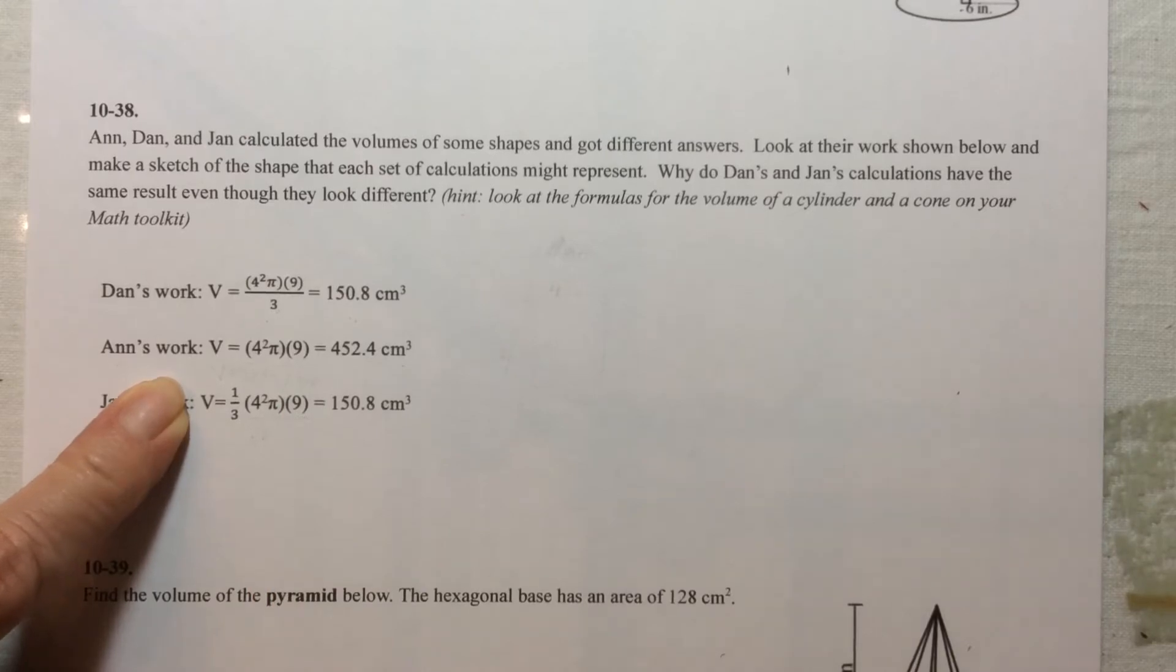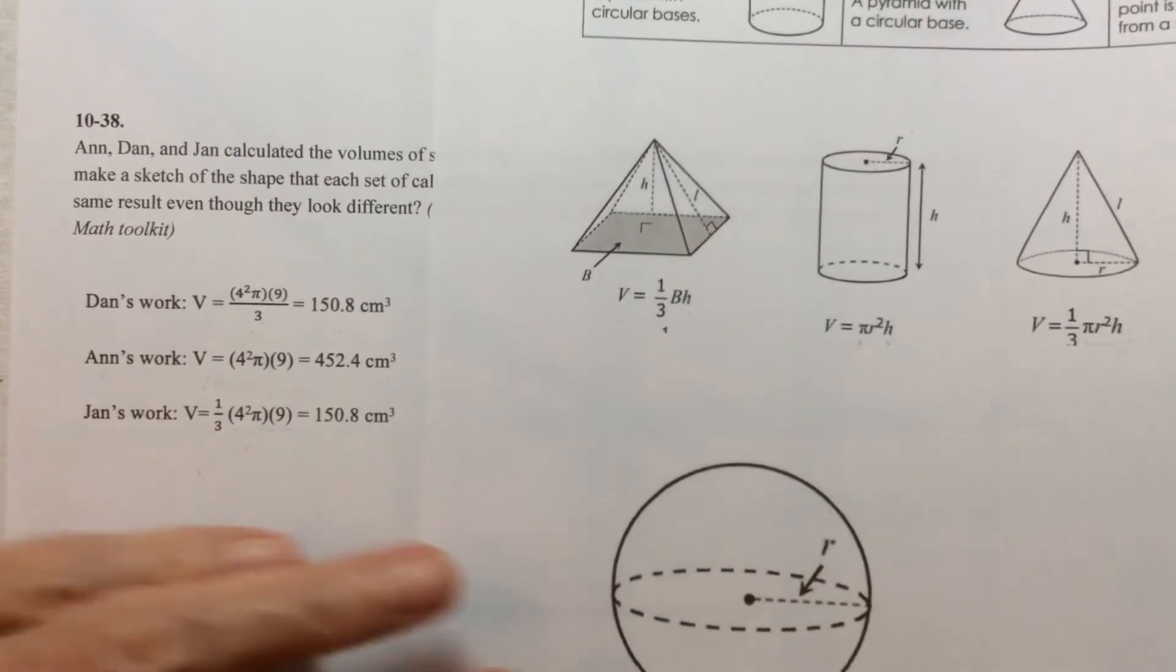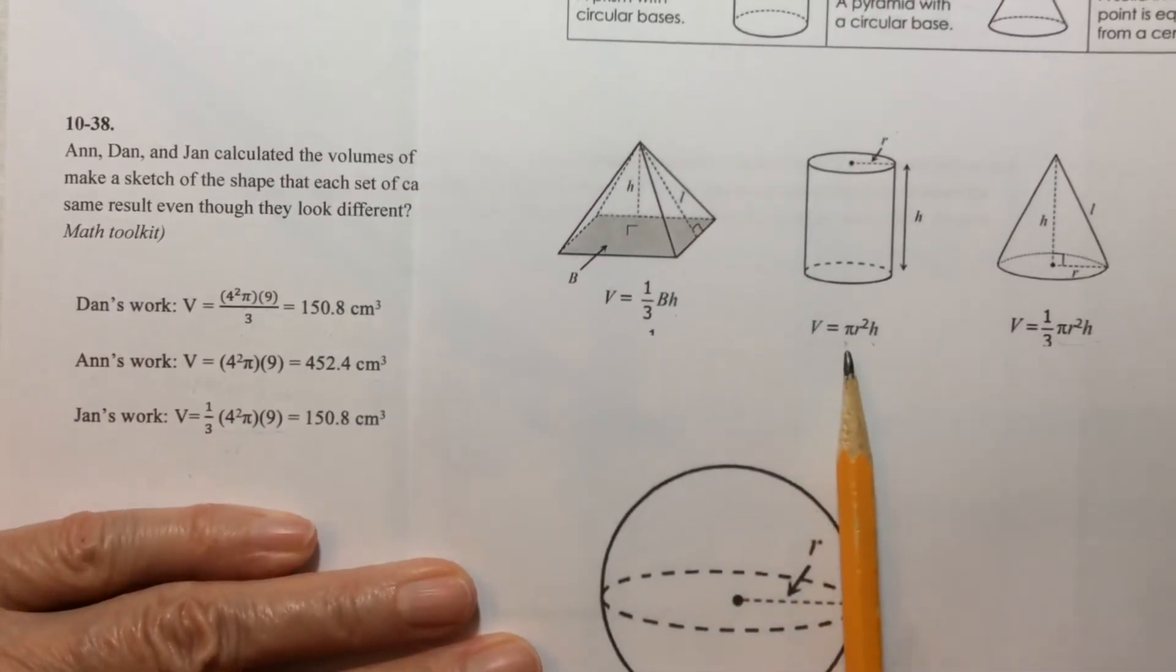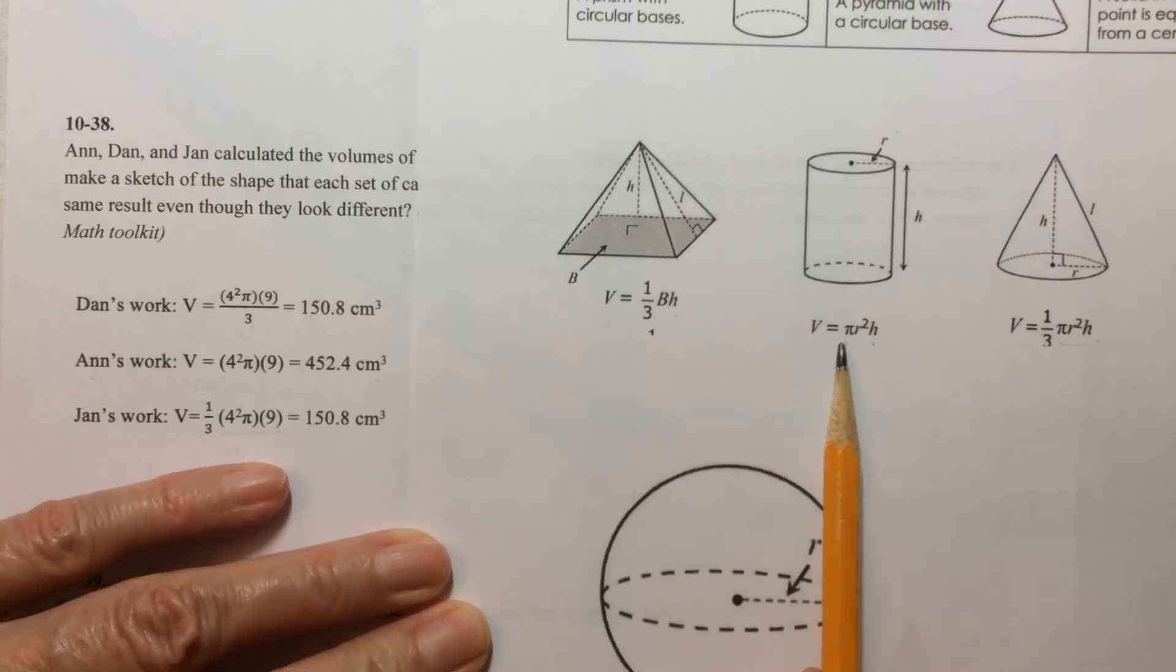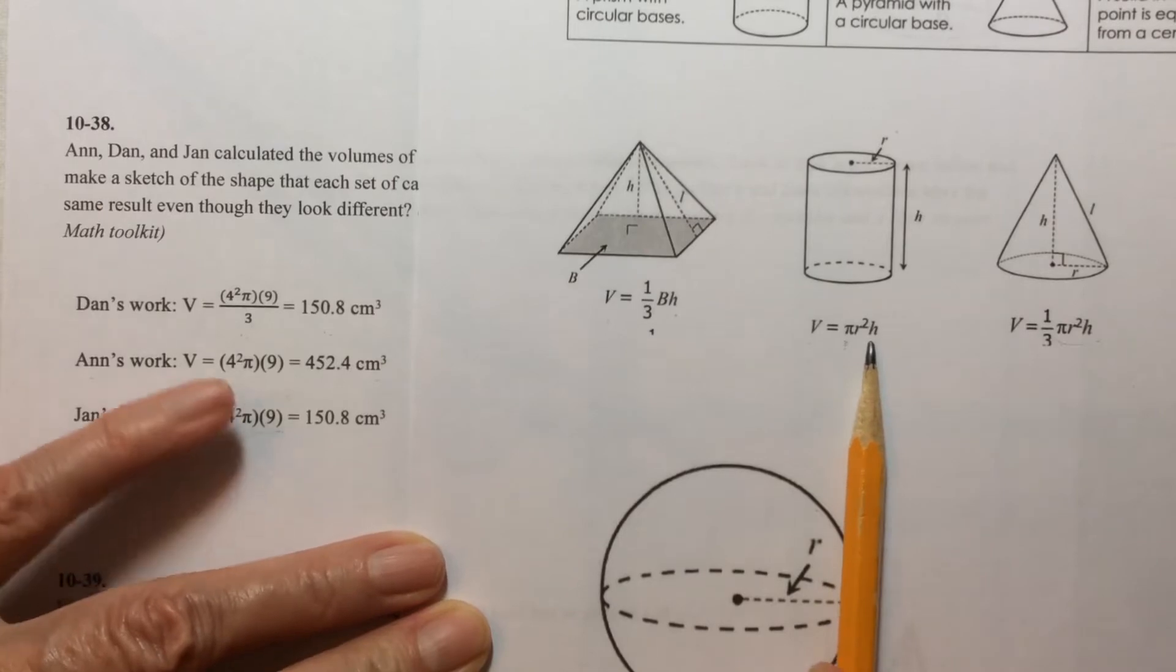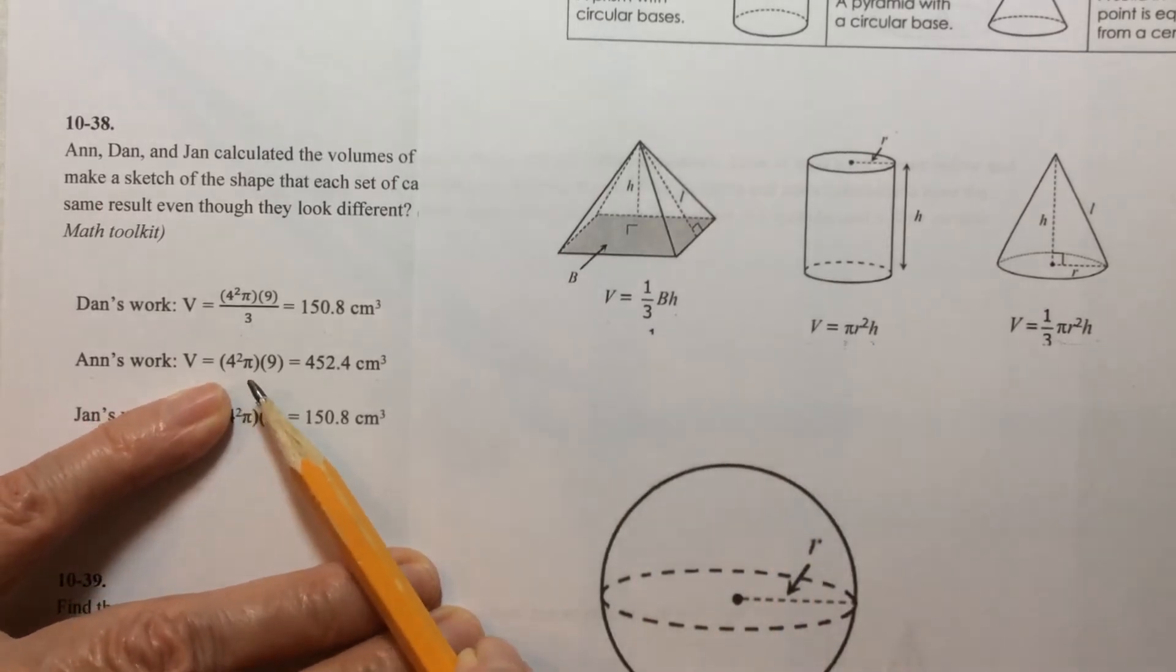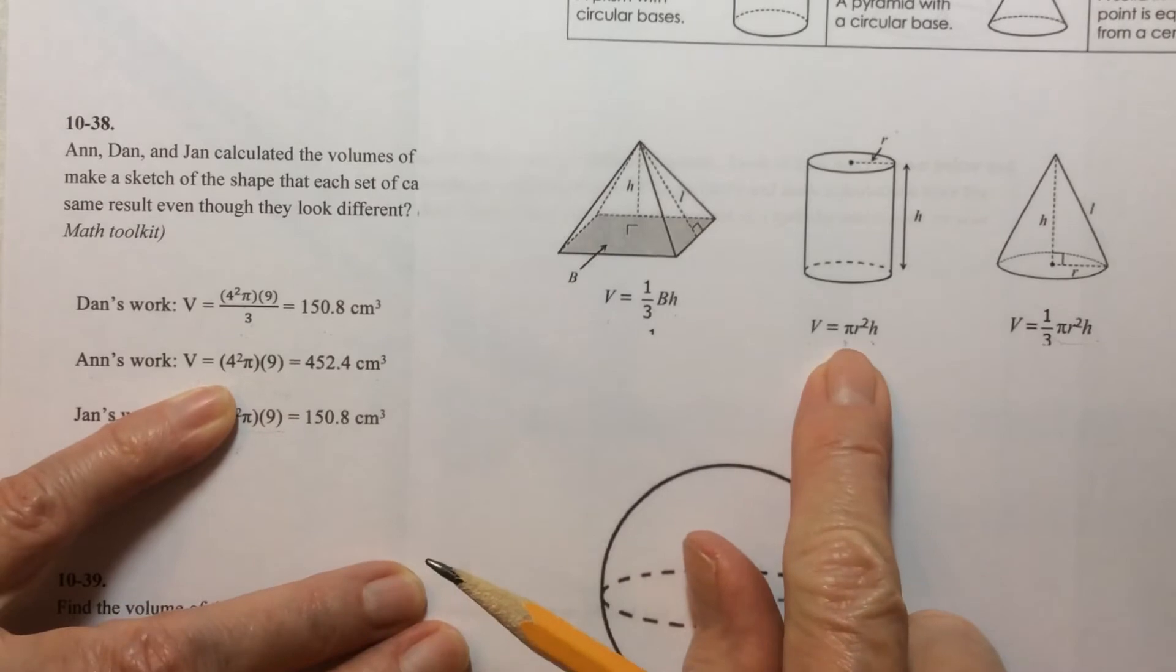And if we look at our math toolkit and we look at the calculations for the volume of a cylinder we see that it's pi r squared times h. And so these numbers match up pretty well with this calculation.